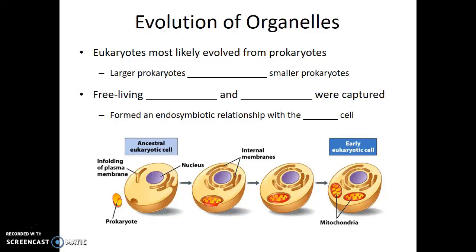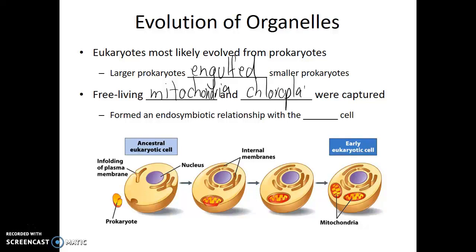The energy organelles are the best examples of organelles that likely arose from other organisms at a previous time. Eukaryotic cells in general are considered to have evolved from prokaryotes when a larger prokaryote engulfed a smaller one. This isn't all that surprising — it's very common for larger cells to engulf smaller cells. But usually the smaller cell is digested and broken down. In the case of mitochondria and chloroplasts, it seems like these previously free-living cells became permanent internal compartments, forming an endosymbiotic relationship with the host cell.